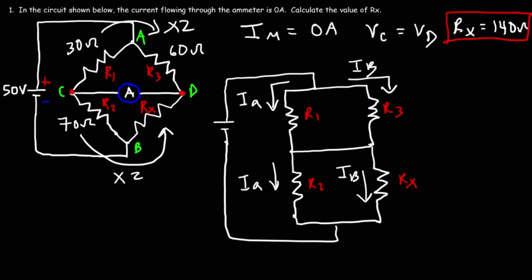Now, because these two points are directly attached to each other, the voltage is the same. So as we said before, Vc is equal to Vd. The potential at those two points will be the same. That means that Vr1 is equal to Vr3, because R1 is connected directly across R3. So the voltage across those two resistors will be the same. Likewise, Vr2 is equal to Vrx, because these resistors are parallel to each other.